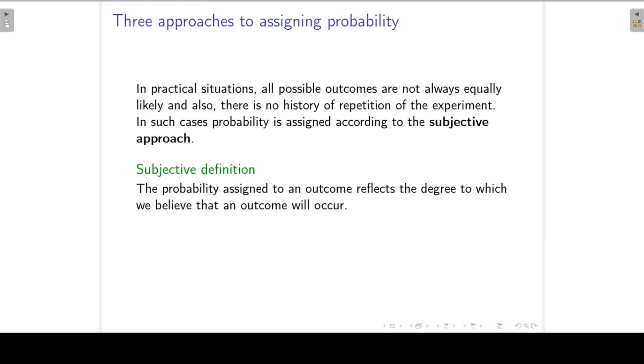In practical situations, all possible outcomes are not always equally likely, so the classical definition cannot be used. And there is also no history of repetition of the experiment, so that means that the relative frequency approach is also not valid. In such cases, probability is assigned according to the subjective approach. Now the subjective definition means that the probability assigned to an outcome reflects the degree to which we believe that an outcome will occur.